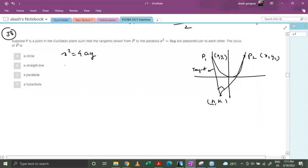So I will differentiate it. 2x equals to 4a dot dy by dx which is nothing but 4am. Slope of this equation is m and slope of this equation is minus 1 by m because of the perpendicular nature.